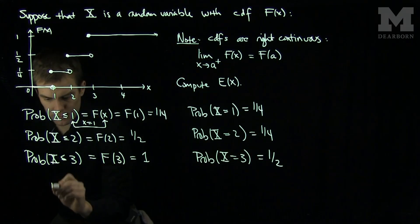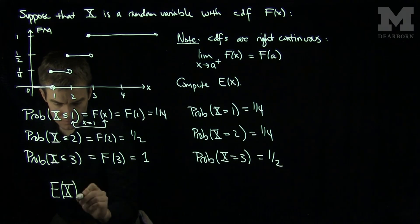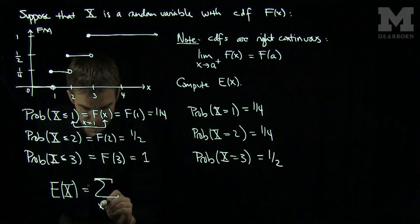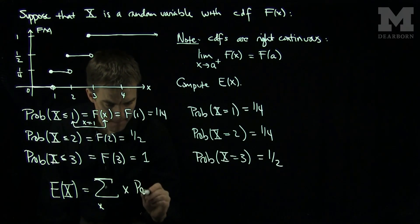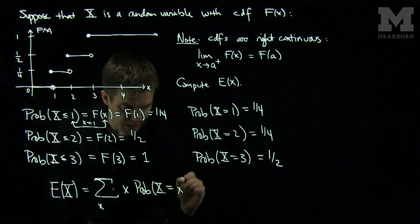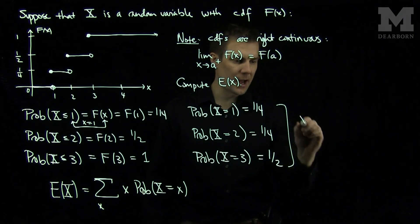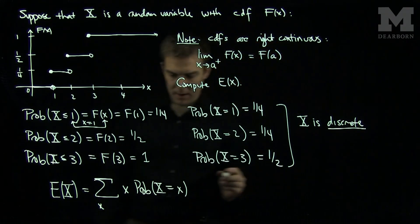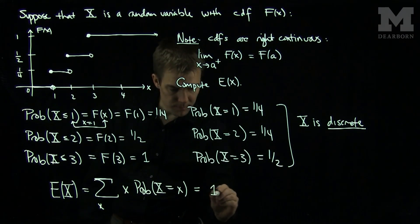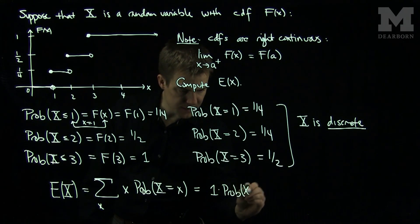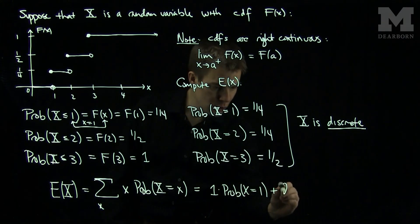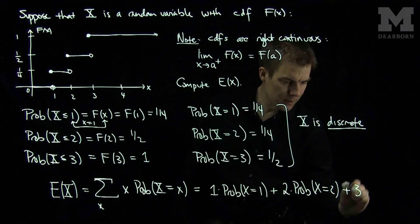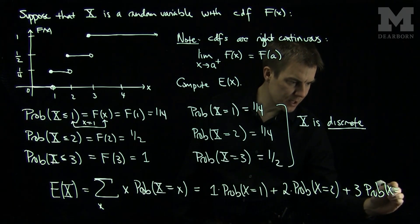Now I can compute the expected value. The expected value of X is going to be the sum over x such that we have x times the probability that X is equal to x, since these conditions imply that the random variable X is discrete. And so what we'll have here is we're going to have 1 times the probability that X equals 1, plus 2 times the probability that X equals 2, plus 3 times the probability that X equals 3.